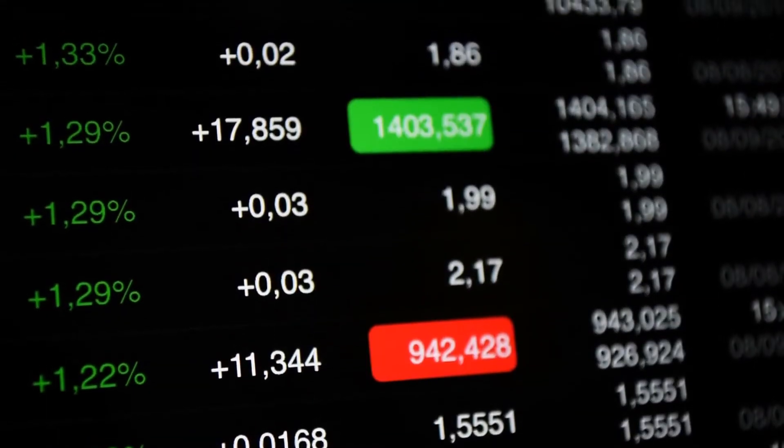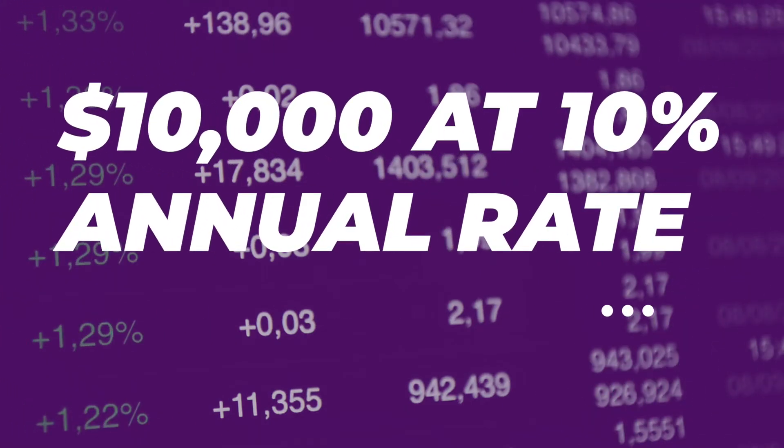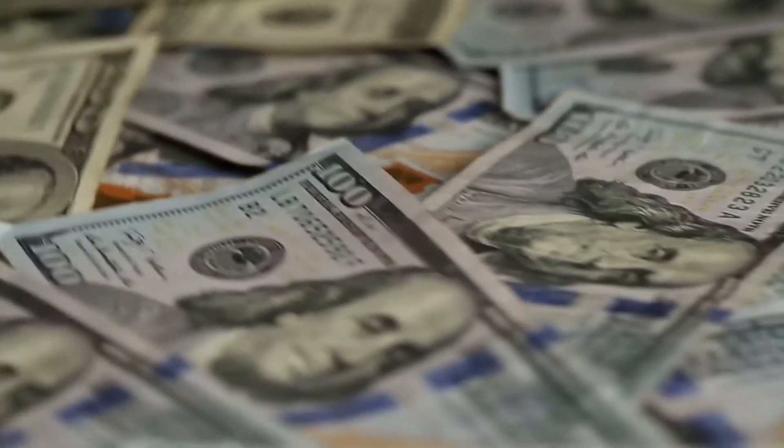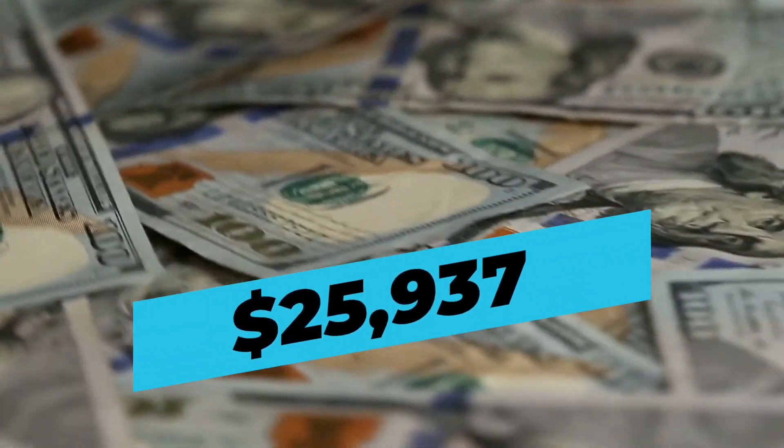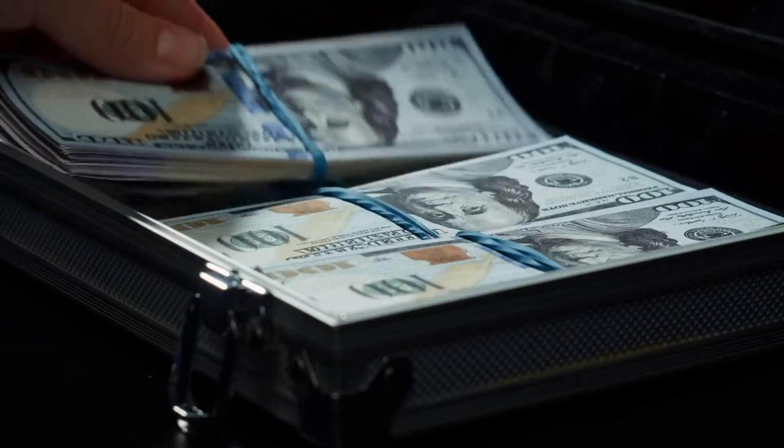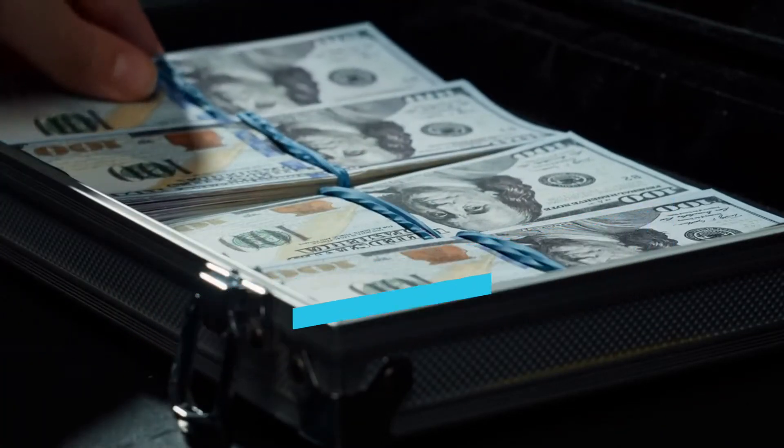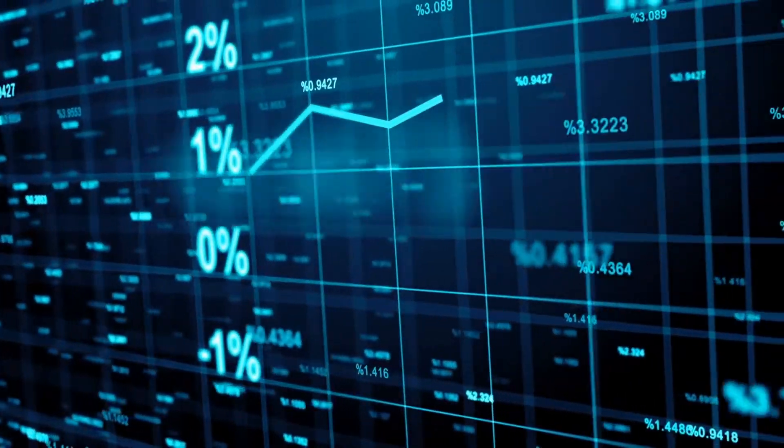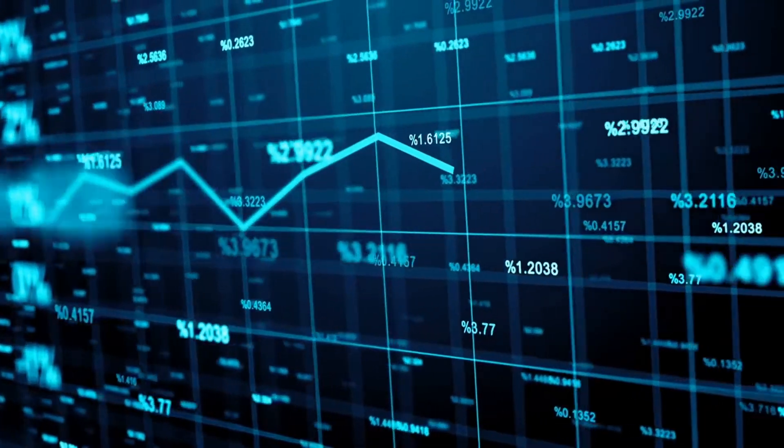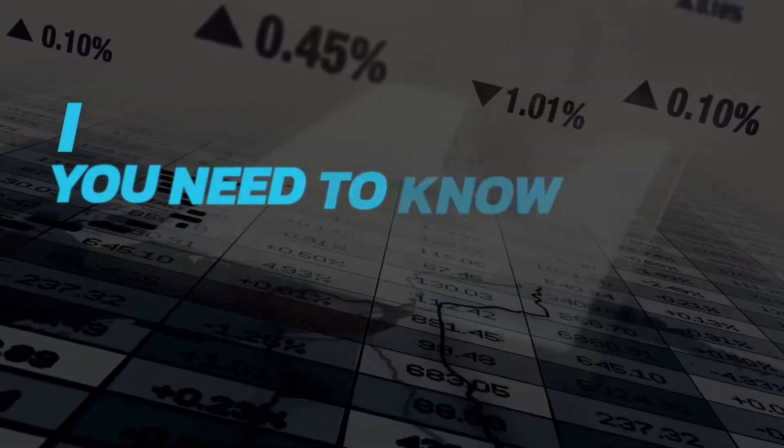For example, let's say you invest $10,000 at a 10% annual rate of return. After 10 years, you will have $25,937. And after 20 years, you will have $67,275. The important thing to remember is that compound interest works over time. So the sooner you start investing, the better.